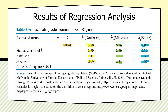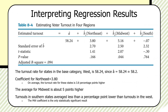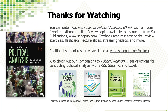To summarize: turnout in the base category (west) is 58.24. The northeast coefficient is 3.8 — on average, turnout is 3.8 percentage points higher — but not statistically significant. The midwest average is about five points higher and is statistically significant. Southern states are less than a percentage point lower and not significant. The midwest coefficient is the only statistically significant result.